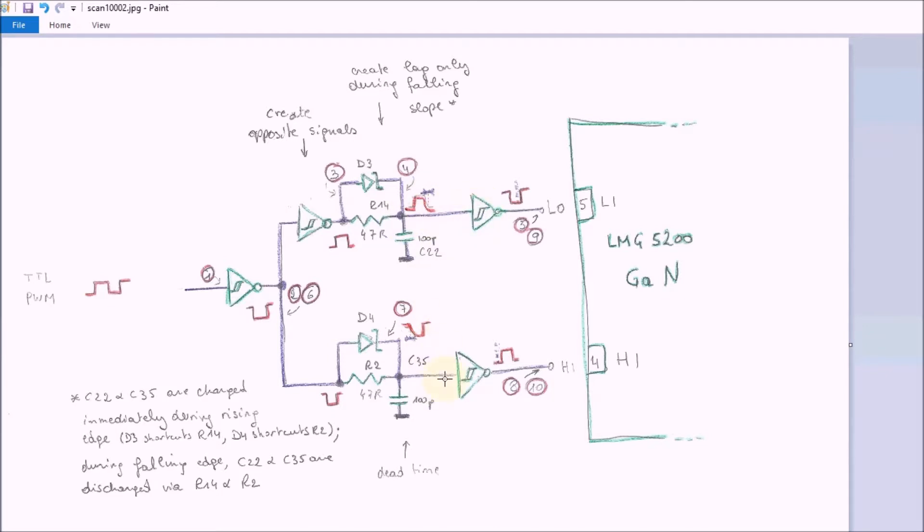So in essence these are the same signals but shifted in time. Then the Schmitt trigger and the inverted signal, and we have what we want. We have a high and a low signal that are opposites and also have a slightly delayed rising edge.